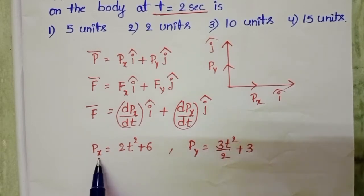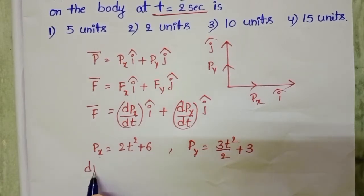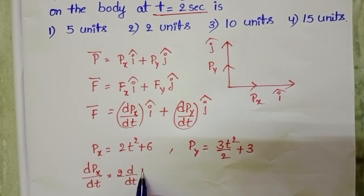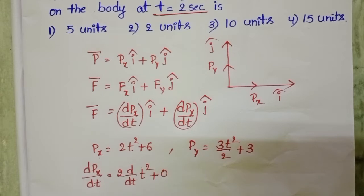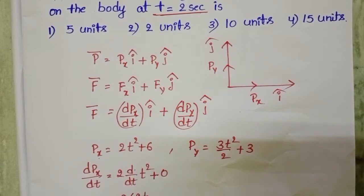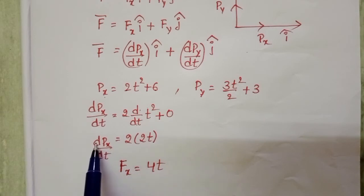Now differentiate Px and Py with respect to time. dPx/dt equals 2 into d/dt of t squared plus differentiation of constant which is 0, giving 2 into 2t. Therefore Fx equals 4t, because dPx/dt equals Fx.